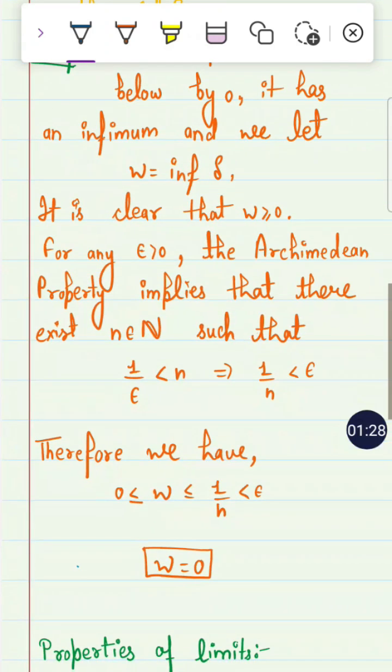Therefore, we have 0 ≤ W ≤ 1/N. So when you take limit of this, this goes to 0. So W equals 0.